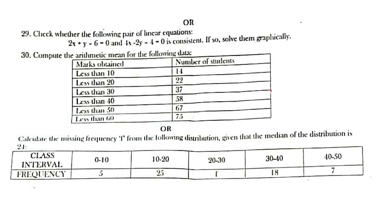Or check whether the following pair of linear equations — 2x + y − 6 = 0 and 4x − 2y − 4 = 0 — is consistent; if so, solve them graphically. Then compute the arithmetic mean of the following data (marks obtained and number of students): less than 10: 14, less than 20: 22, less than 30: 37, less than 40: 58, less than 50: 67, less than 60: 75.